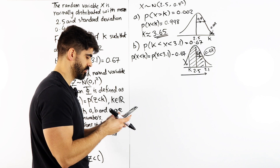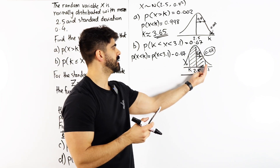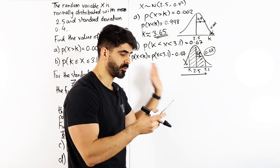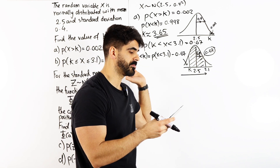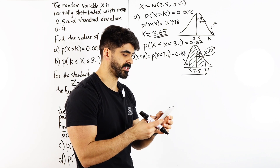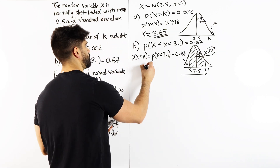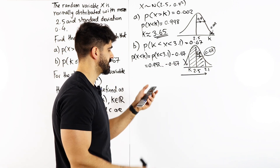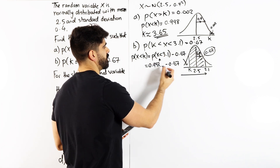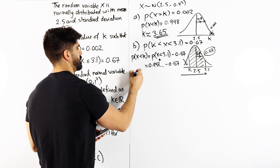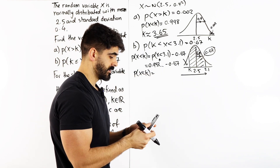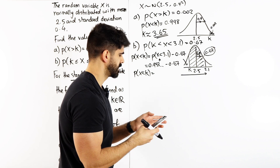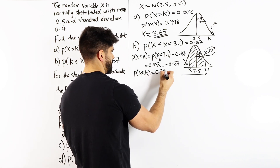Go to menu, 7, normal CD. For the lower limit, calculators don't go beyond 5 standard deviations from the mean, so just use minus 9999999999 up to 3.1, with sigma 0.4 and mu 2.5. We get 0.933. I'm going to store this as A. Then I compute A minus 0.67, which gives 0.263.